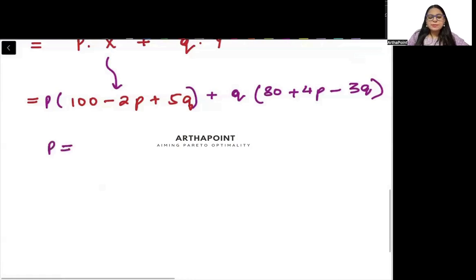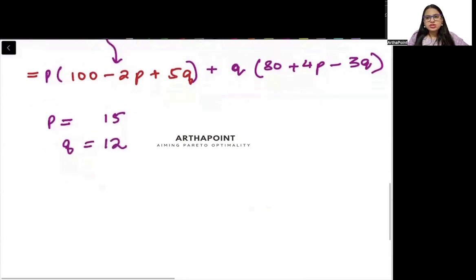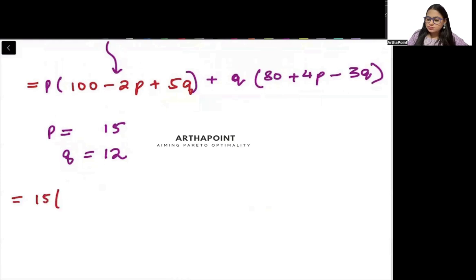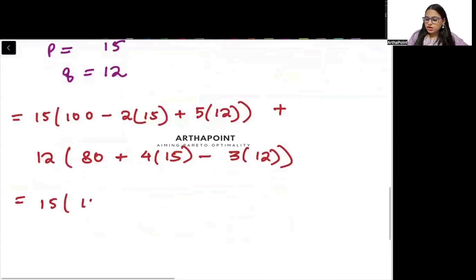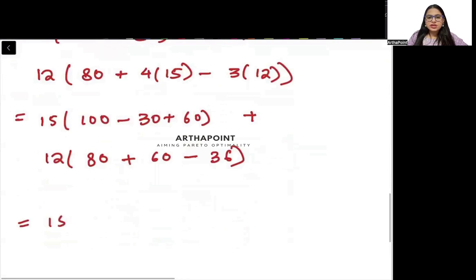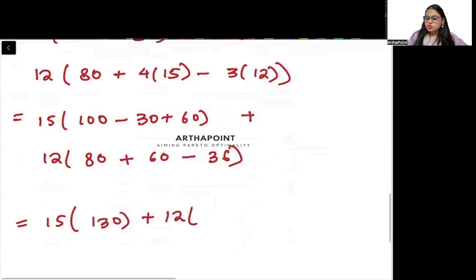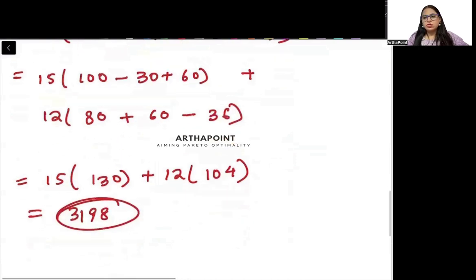We are given that price P equals 15 and Q equals 12. I will just put in these values. So what will I get? 15 times (100 minus 2 into 15 plus 5 into 12) plus 12 times (80 plus 4 into 15 minus 3 into 12). This is going to be 15 into (100 minus 30 plus 60), which is 15 into 130, plus 12 into 104. When you solve this you will get 3198 and this will be your revenue. We have calculated the total revenue of the firm.